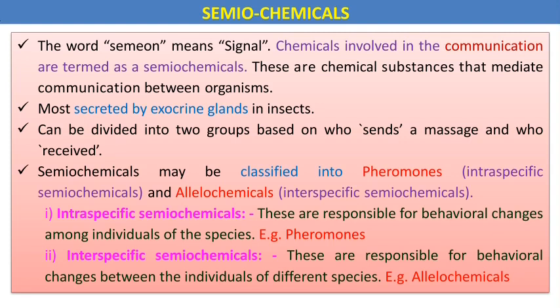Pheromones are involved in intraspecific communications, and allelochemicals are involved in interspecific communication. Intraspecific semiochemicals are responsible for behavioral changes among individuals of the same species — that is pheromones. Interspecific semiochemicals are responsible for behavioral changes between individuals of different species — that is allelochemicals.